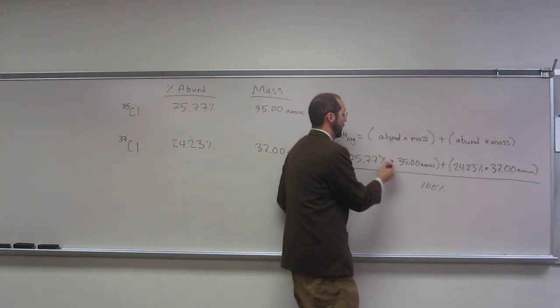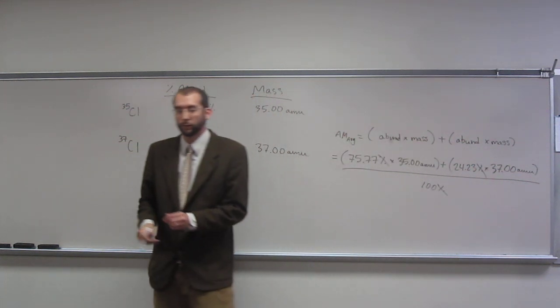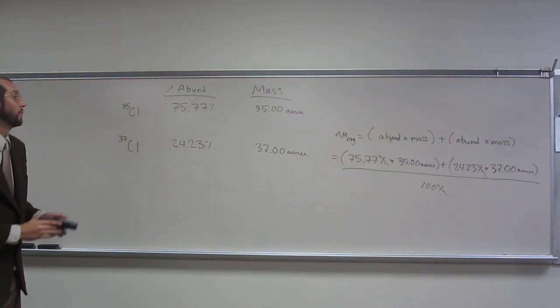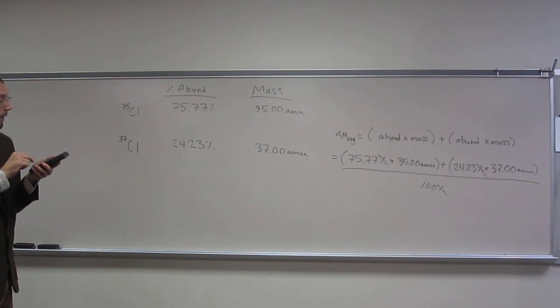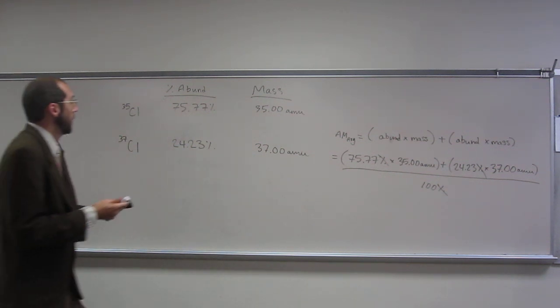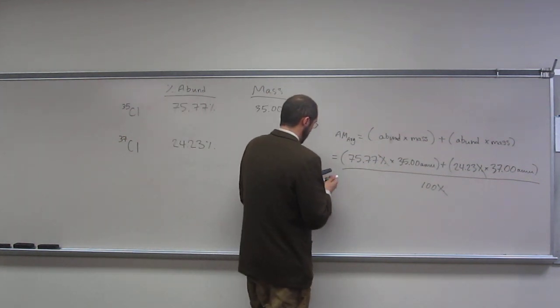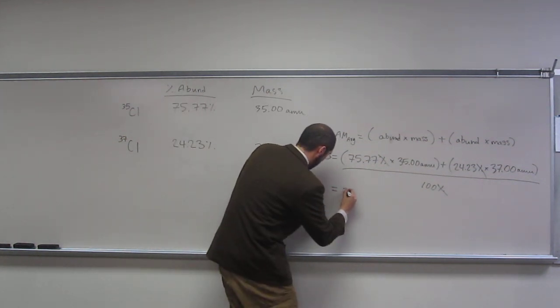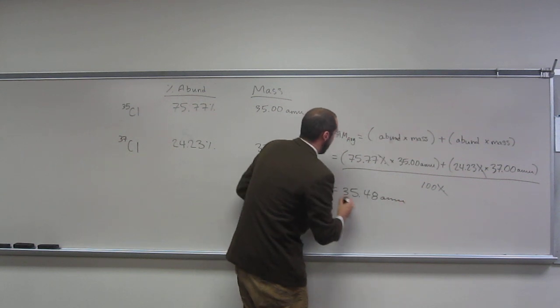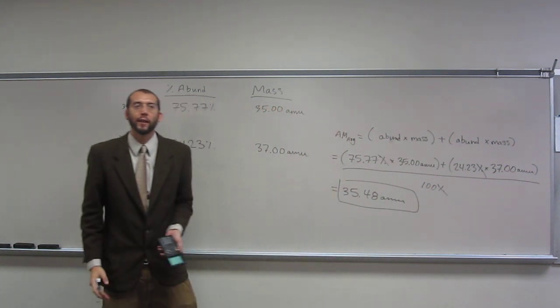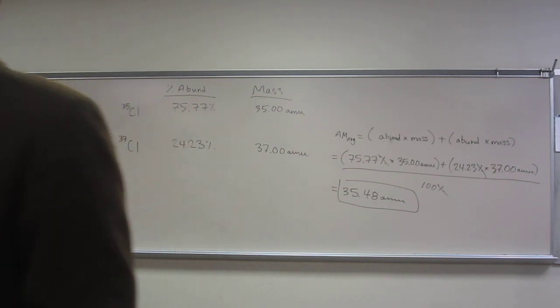So when we do that, percents are going to cancel and let's figure it out. So, 75.77 times 35 plus 24.23 times 37 divided by 100. And I got 35.48 amu as the average mass of chlorine given these abundances and masses.